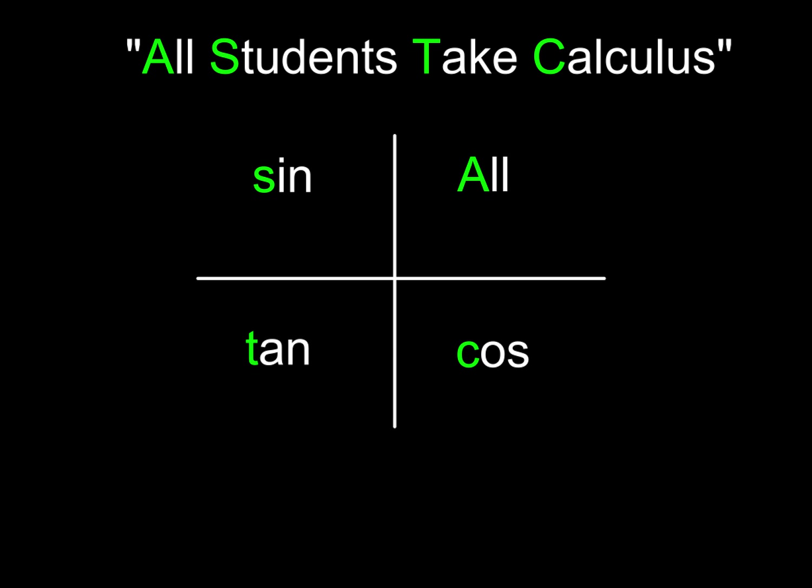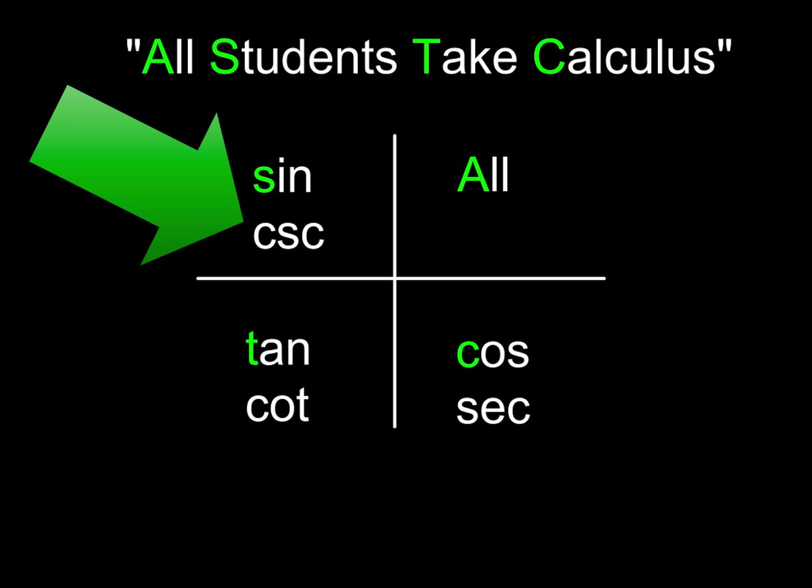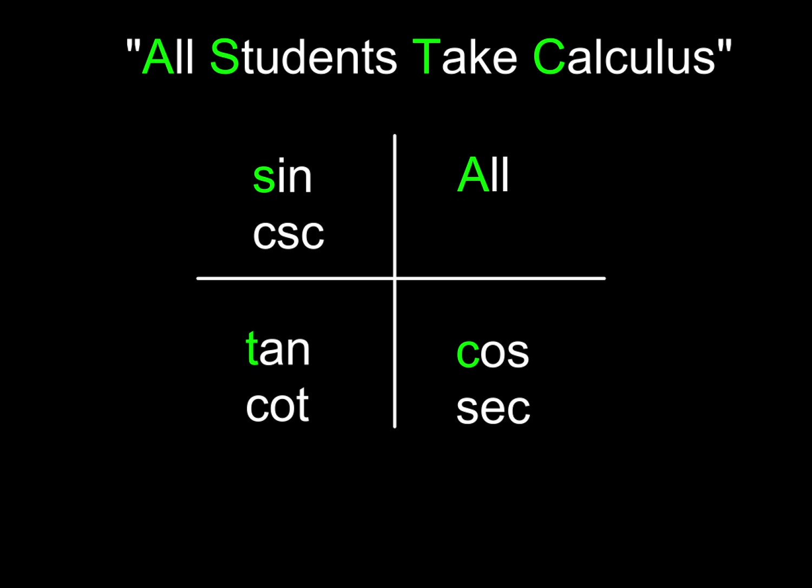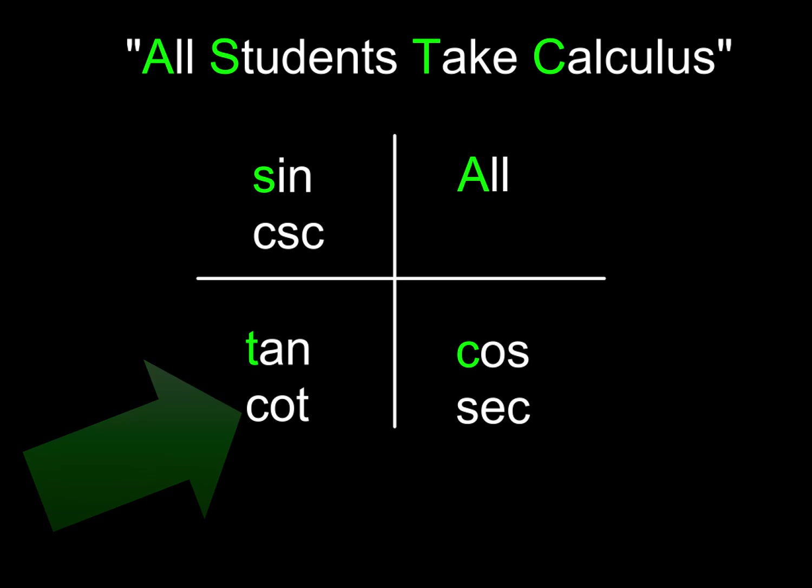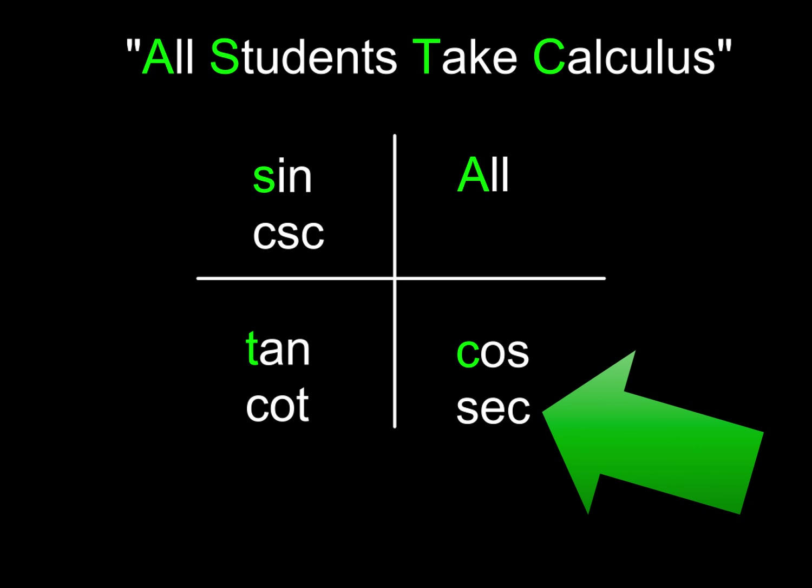Don't forget, these are only three of the six trig functions. So their reciprocal functions of sine, cosine, and tan would be positive in the same spots as their reciprocals. Which means in quadrant two, cosecant is also going to be positive. In quadrant number three, cotangent is going to be positive. And of course, secant will be positive in quadrant four, because it's the reciprocal of the cosine function.